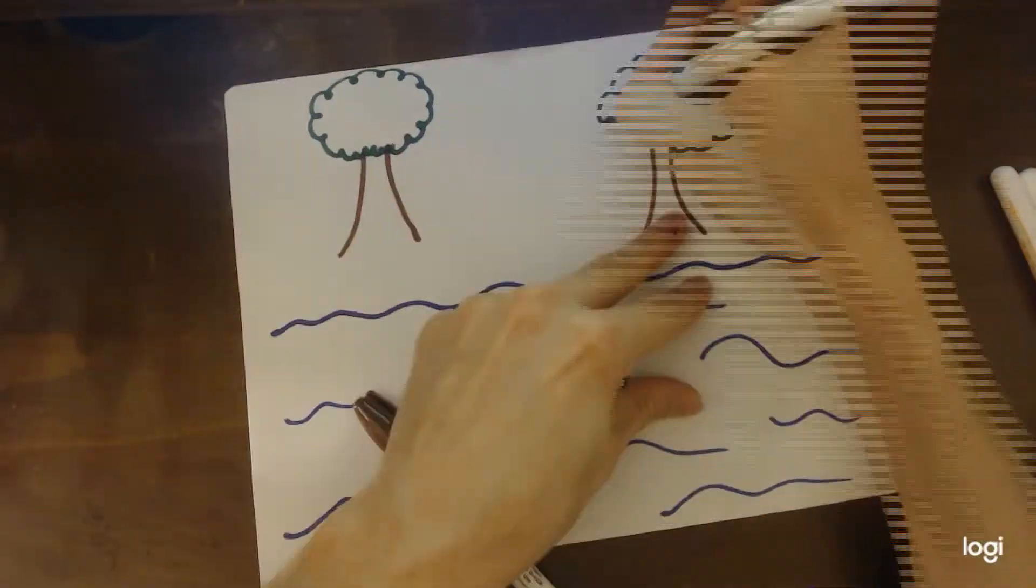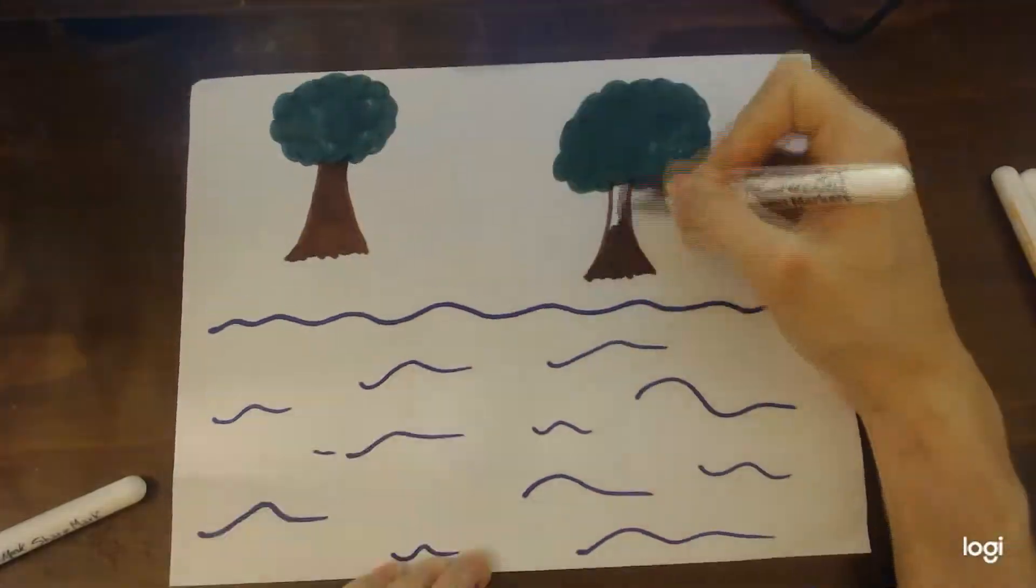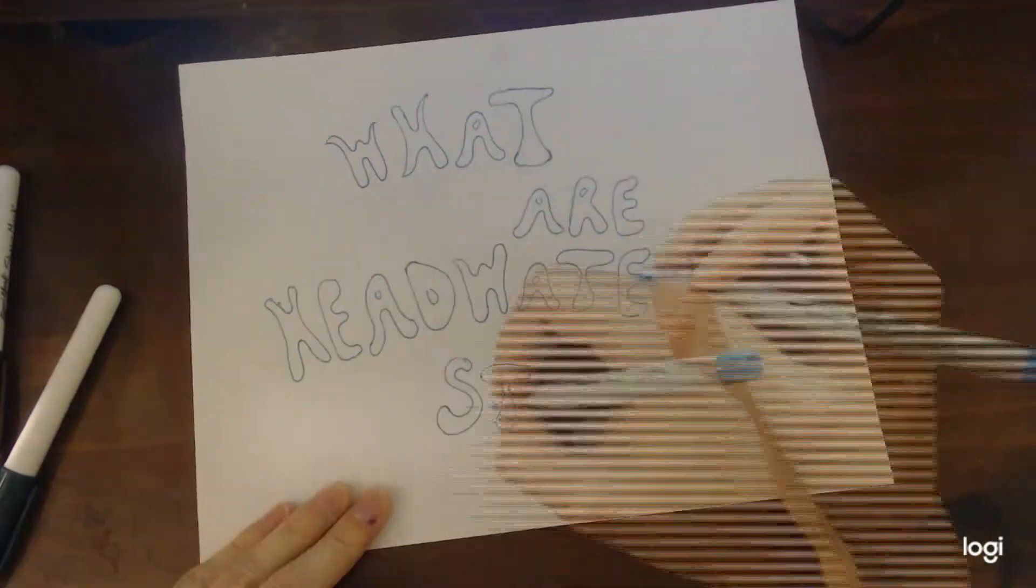Have you ever looked at a river and wondered where all that water came from? How did it get here, or even what kind of places has it seen? This is where headwater streams come in. But what are headwater streams?